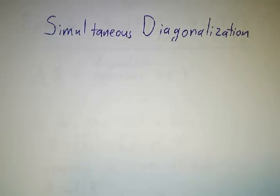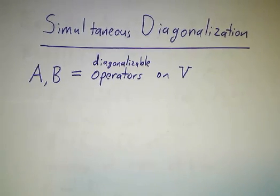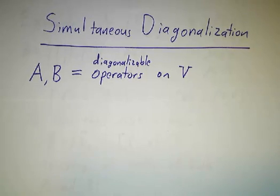In this video, we're going to talk about simultaneous diagonalization of two operators. So the situation is that you have two operators on a vector space V, and we're assuming that both of them are diagonalizable.